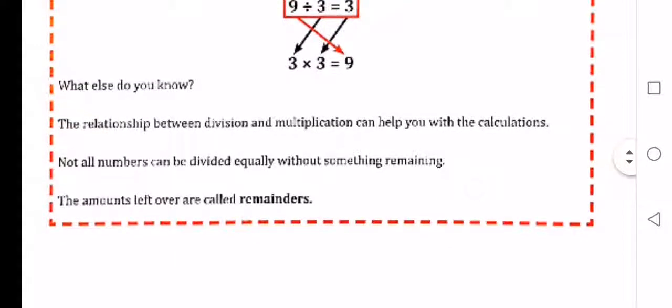What else do you know? The relationship between division and multiplication can help you with the calculations. Not all numbers can be divided equally without something remaining. The amounts left over are called remainders.